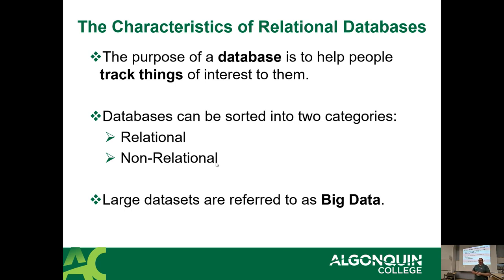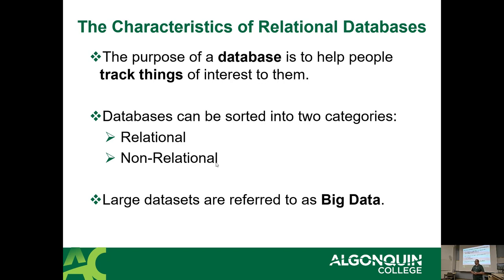Some characteristics of a relational database: the purpose of a database is to help people track things that interest them. Whether it's interesting for me or for you, that might be different pieces of information you care about. Databases can be sorted into two categories — relational and non-relational — and those will be defined in a moment. Large data sets are referred to as big data. Whenever you hear 'big data,' it just means they have piles and piles of data shoved into databases somewhere — it's like the phrase 'cloud,' which just means it's on somebody else's computer.